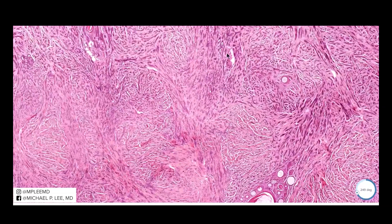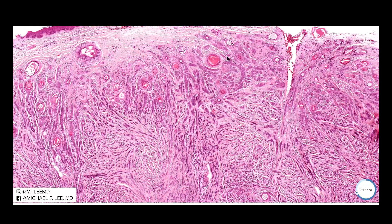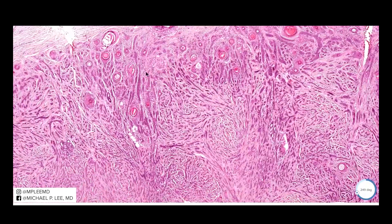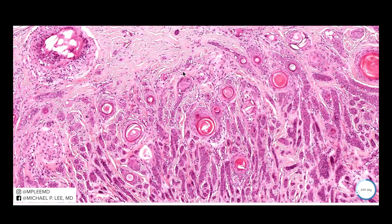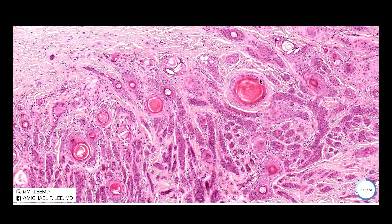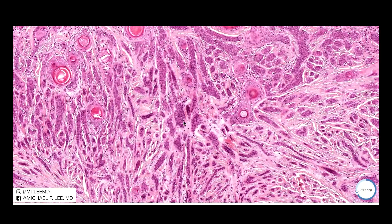There is some follicular differentiation with these horn pseudocyst-like structures. If you look closely, we also have these paisley-tie-like structures. This is a biphasic tumor, and that's the first thing that should tip you off toward the right diagnosis. When we see structures like this, we typically think about things like syringoma, which is a common differential in this lesion. And then we have these follicular horn pseudocysts present — so that's the initial tip-off.